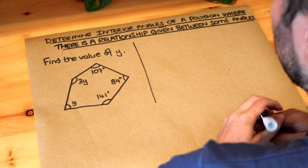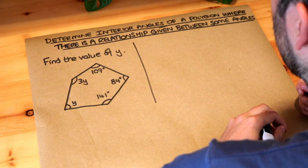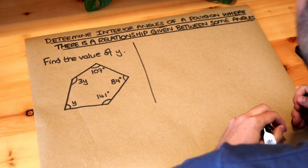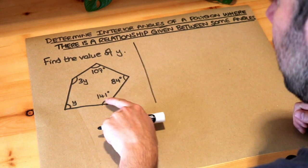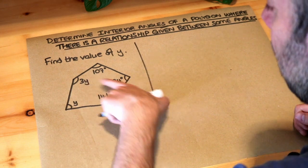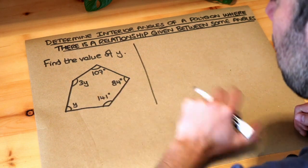Hello and welcome to this Dr Frost video on determining interior angles of a polygon where there's a relationship given between some angles. So we just need to find the value of y. Now y is used in two angles here, we've got 3y and we've got y.